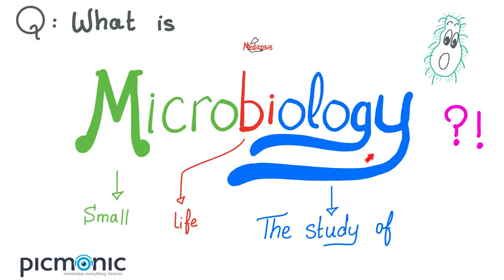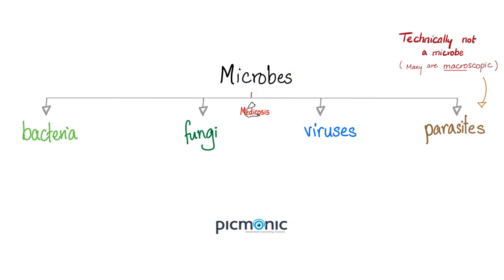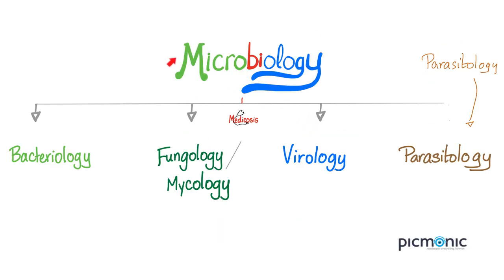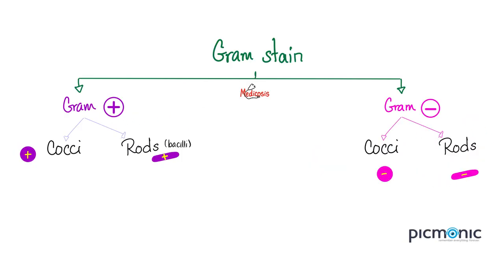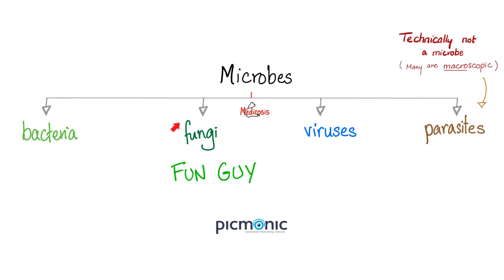Remember that microbiology literally means the study of small life. Microbes include bacteria, fungi, viruses, and parasites. That's why microbiology studies bacteriology, fungology or mycology, virology, and parasitology. We divided bacteria by gram stain into gram-positive bacteria, which stain purple, and gram-negative bacteria, which stain pink. Today, we are talking about fungi — but how can we classify them?